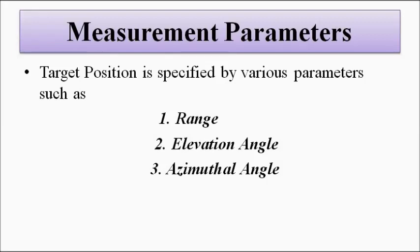All three parameters combined together give us exact information about the location of the target. If we know only one parameter, it is of no use. For example, if the separation distance from the source is 50 kilometers, we still need to know in which direction — north, east, west, south — and how high above the ground. All three pieces of information are required together.